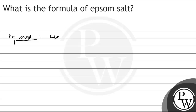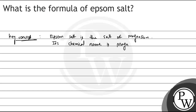So, Epsom salt is the salt of magnesium. Ye magnesium ka salt hota hai. And the second point is, its chemical name is magnesium sulfate heptahydrate. Hepta hydrate, theek hai? Aur yeh jo rehta hai, yeh jo solid rehta hai, yeh odorless rehta hai.